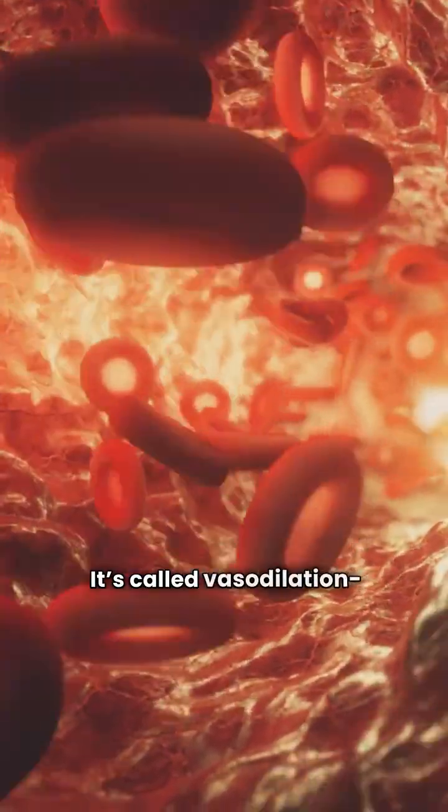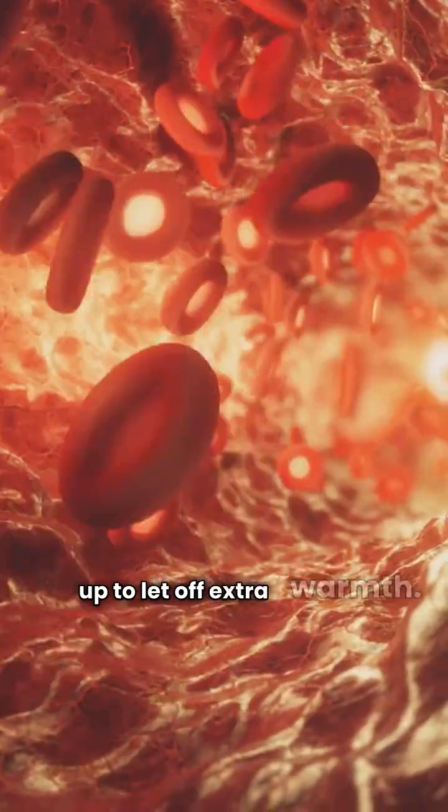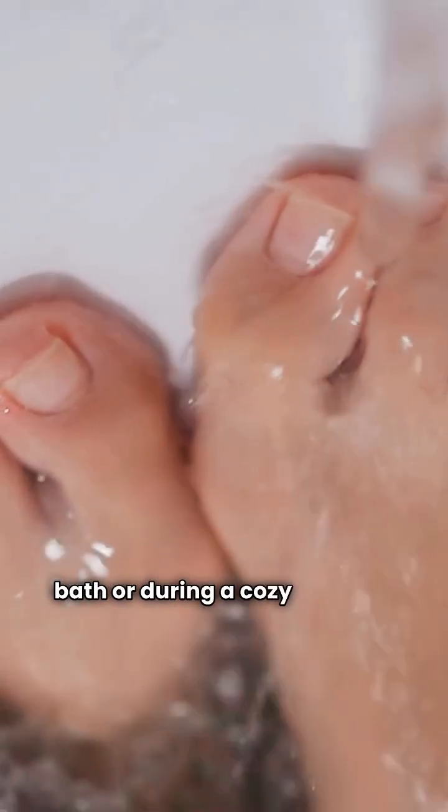Sometimes your body turns your extremities into heat vents. It's called vasodilation. Your blood vessels open up to let off extra warmth. You might feel this after a hot bath or during a cozy evening.